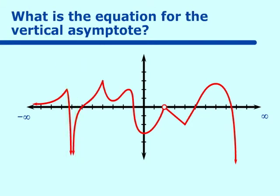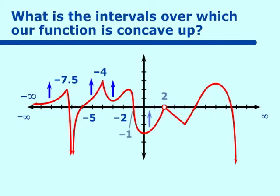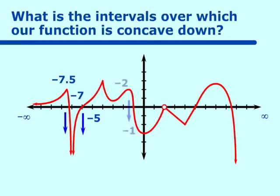What are the intervals over which our function is concave up? It is concave up from negative infinity to negative 7.5, again from negative 5 to negative 4, negative 4 to negative 2, and negative 1 to 2. Where is our function concave down? It is concave down from negative 7.5 to negative 7, negative 7 to negative 5, negative 2 to negative 1, and 5 to infinity.